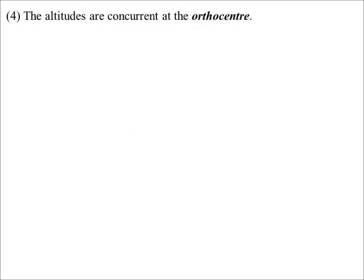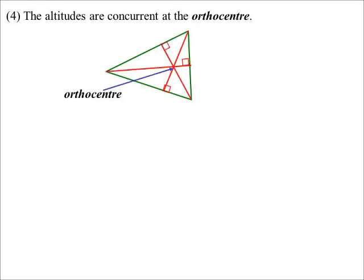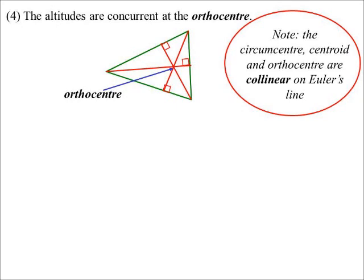And the fourth center is what's called the orthocenter, and that's where the perpendicular heights meet. The interesting thing is the last three will always lie in a straight line, which is known as Euler's line. But they will always be on the same line.